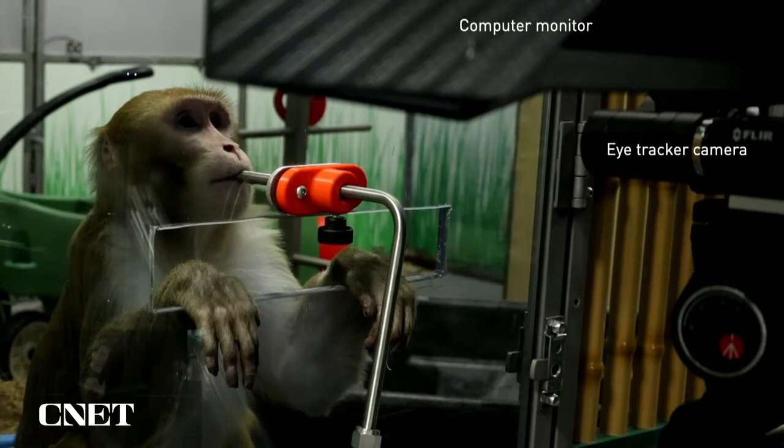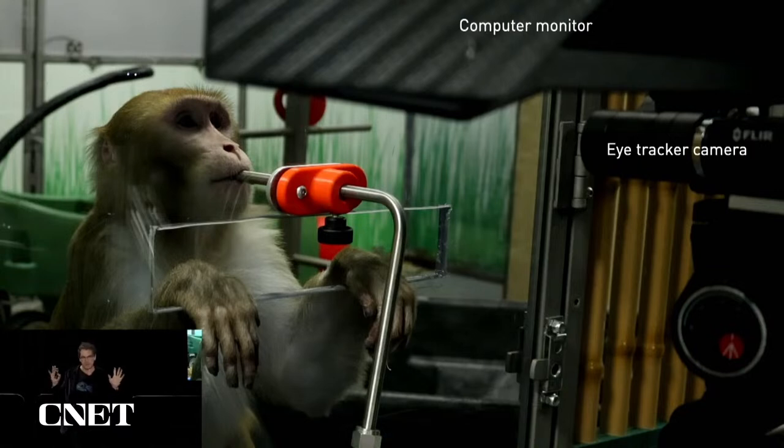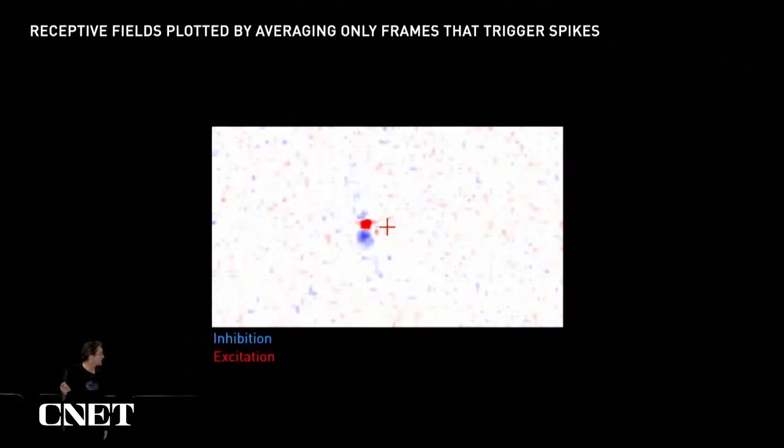We do this by showing the animal a movie of random checkerboards whilst he fixates steadily on the screen. Then we take only the frames of the movie that generated a response in the cell and average them all together. This is a technique known as reverse correlation. It's generally used quite widely in visual neuroscience for this purpose. And this is an example of a receptive field plotted with this technique.